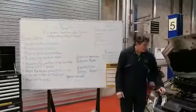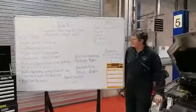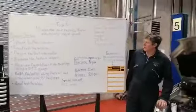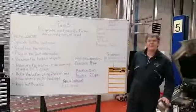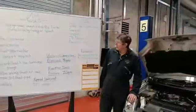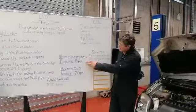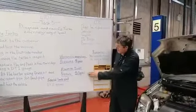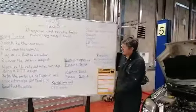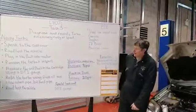So for this vehicle, we've plugged the fault code reader in and it's coming up with a fault code related to the pressure charge system. I've looked on Autodata, and these are the information it's given us — these are our wastegate operating pressure and our maximum boost pressure.